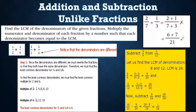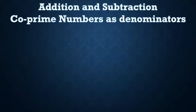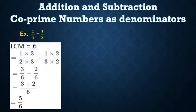Now, what if you want to add or subtract fractions that have co-prime numbers as denominators? Let's look at an example: 1/2 + 1/3. The denominators 2 and 3 are co-prime numbers, so the LCM of 2 and 3 is 6. It becomes (1×3)/(2×3) + (1×2)/(3×2) = 3/6 + 2/6 = 5/6. Therefore, 1/2 + 1/3 = 5/6.